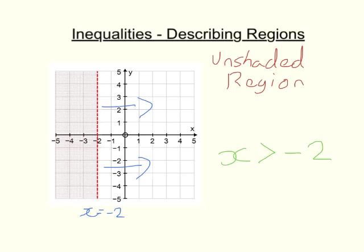The last thing we should note is that this is a dashed line. Because it's a dashed line, this is x is bigger than minus 2 — there's no 'or equal to' part. So we don't include the line itself.